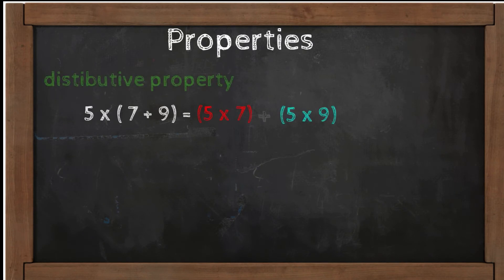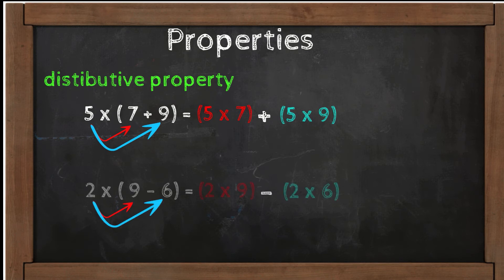The last one is distributive property. Multiplying a sum by a number is the same as multiplying each addend by the number and then adding the products. For example, 5 times the sum of 7 plus 9 equals 5 times 7 plus 5 times 9. You can use it with subtraction also as this example.